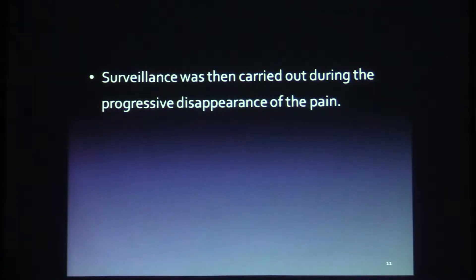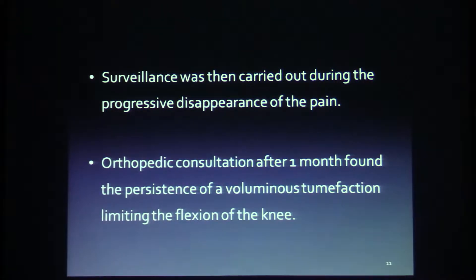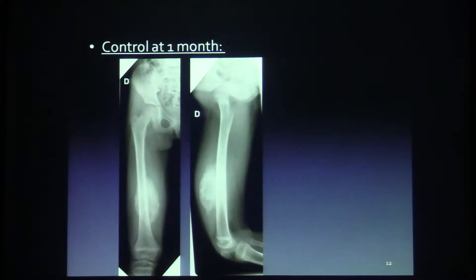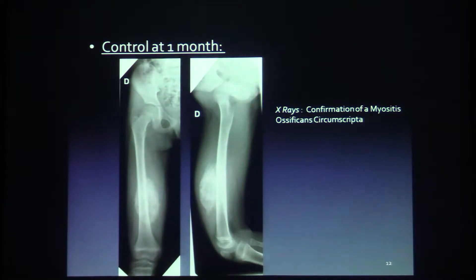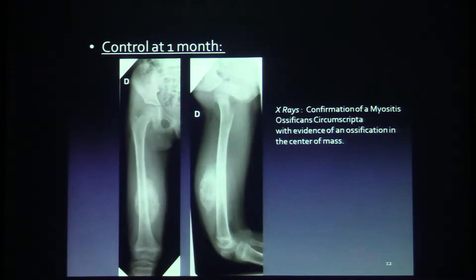No action was required. Surveillance was then carried out during the progressive disappearance of the pain. Orthopedic consultation after one month confirmed the persistence of a voluminous tumefaction limiting the flexion of the knee. X-ray showed confirmation of a myositis ossificans circumscripta with evidence of an ossification in the center of the mass. Another MRI was performed.